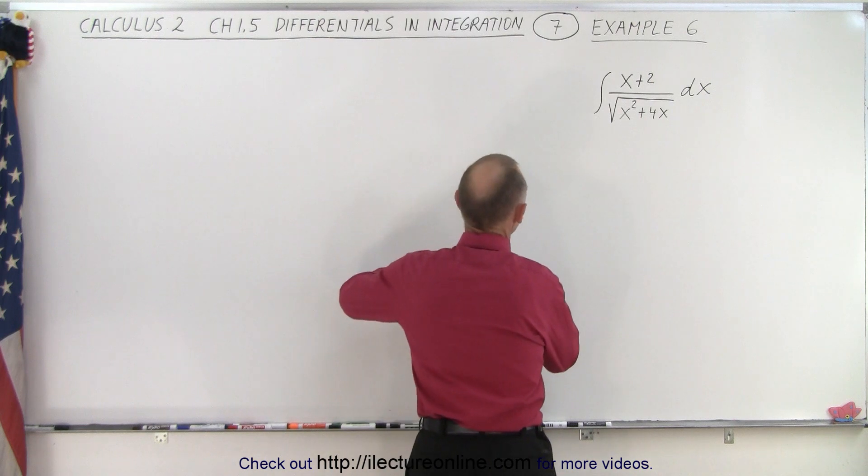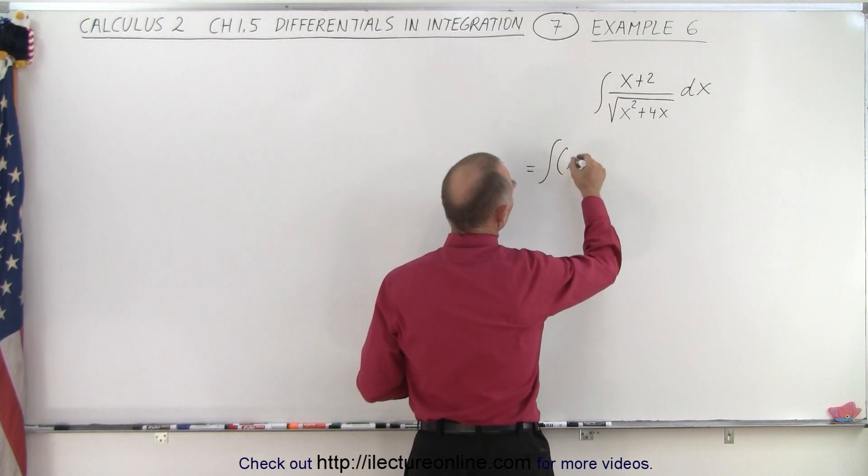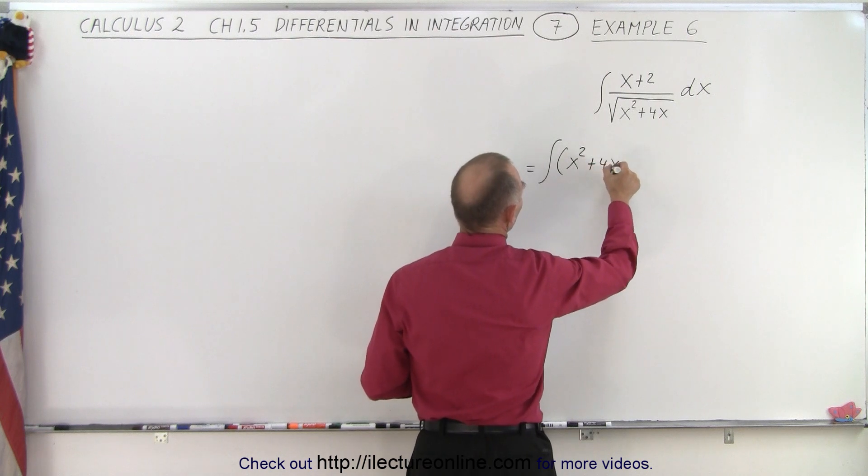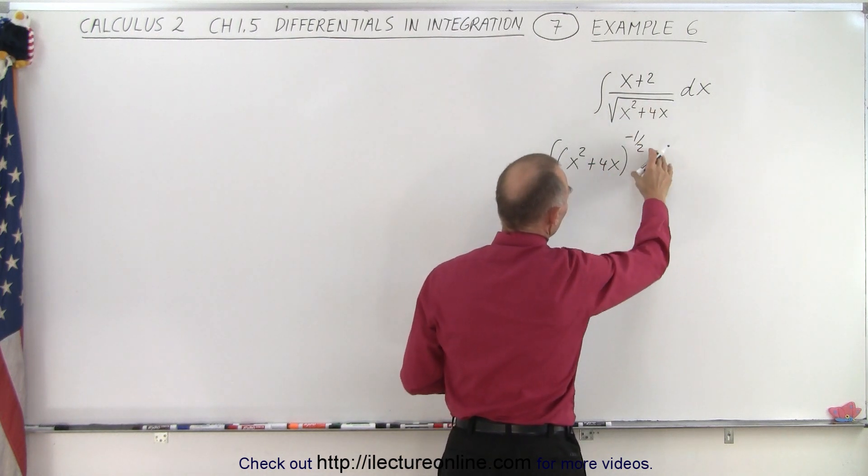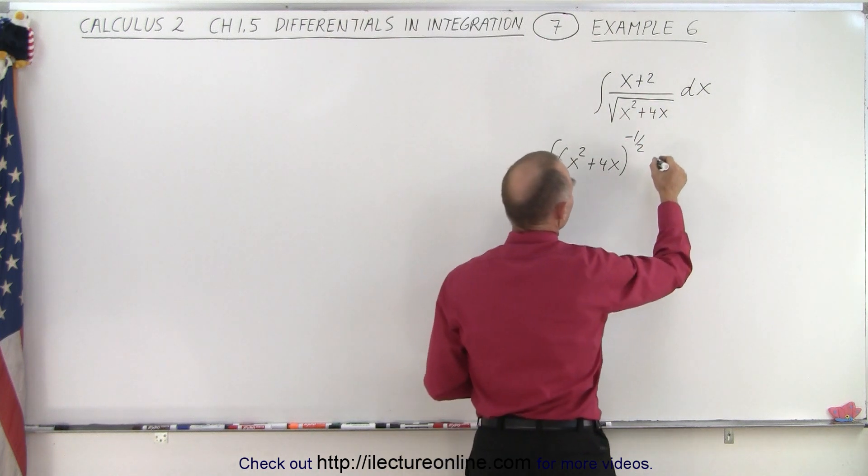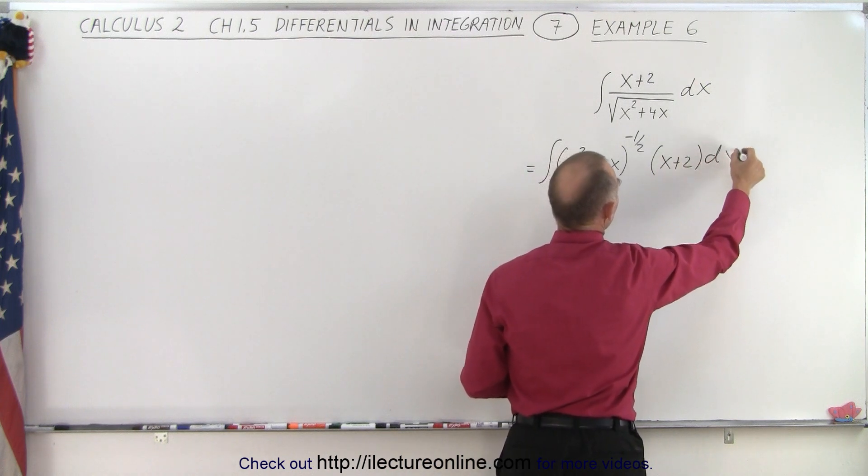So the first thing we're going to do is write it like this. This is equal to the integral of the quantity x squared plus 4x to the minus one half power, because a radical is a one half power. Bring it to the numerator, that's minus one half, and we multiply that times x plus 2 times dx.